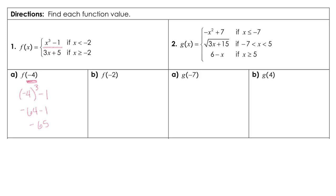Plugging into the next one — notice this is negative 2 and that's where we have our 'or equal to' — so we're going to have 3 times negative 2 plus 5, which gives us negative 6 plus 5, or negative 1.